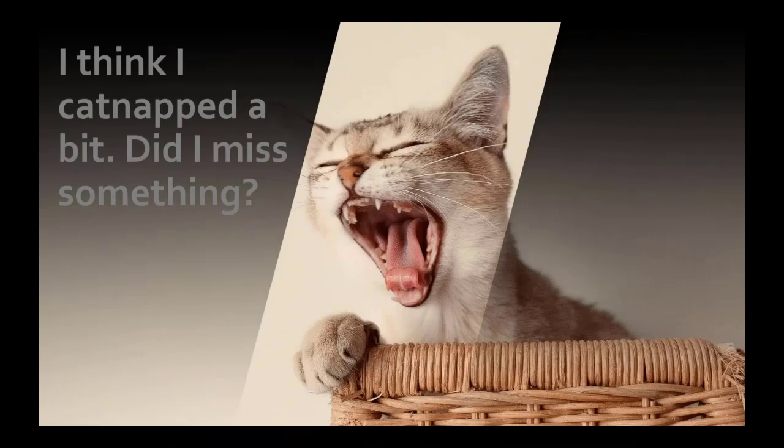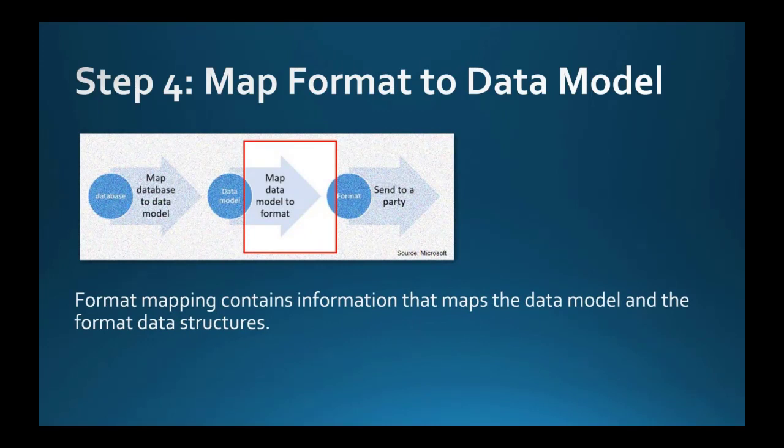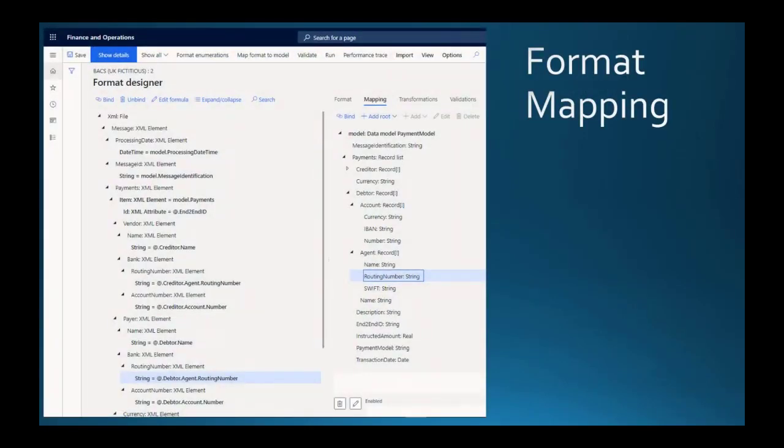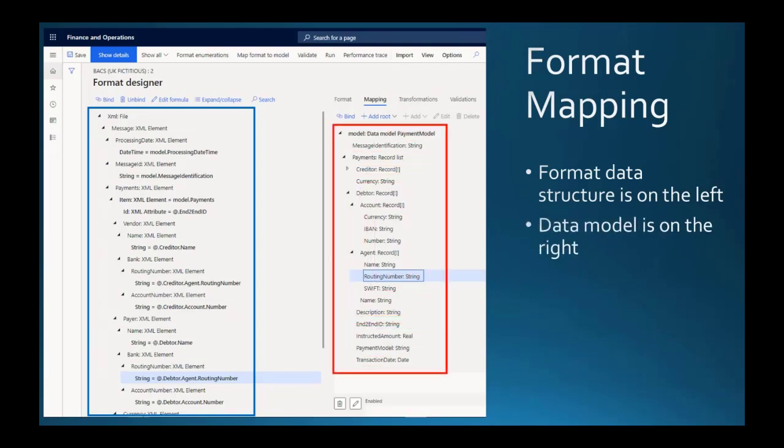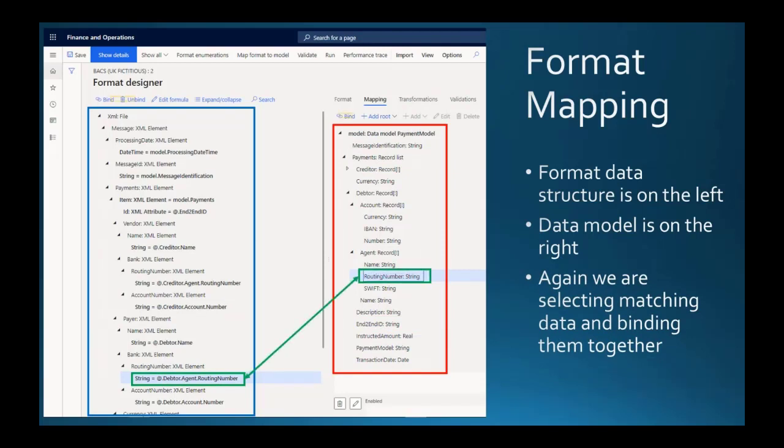Good, let me show you the next step. First on the slides. OK, we are practically almost there. The last missing part in our configuration is the mapping of the data structure between the data model and the format. There's no rocket science here. We have our structure of our format on the left and we have our data model on the right. And again, we have to find the matching parts and connect them by binding them, as you can see here. And this is what we're going to do next in our next slide.